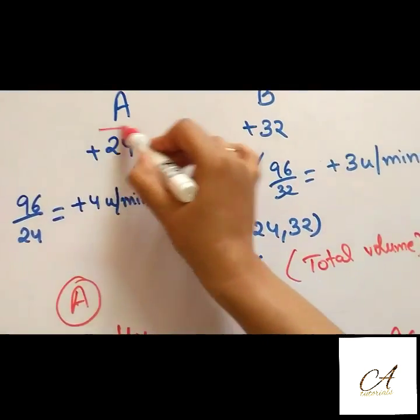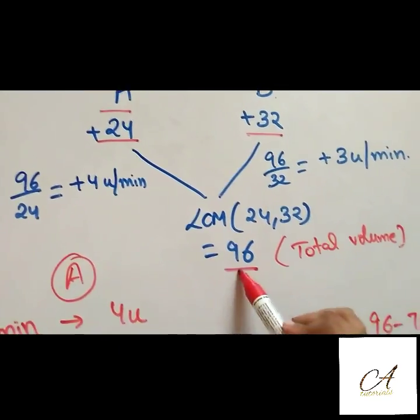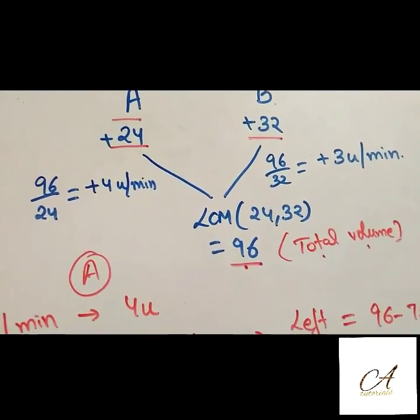A can fill in 24 minutes, B in 32 minutes. Let's take its LCM, it comes out to be 96. This is the total volume of the reservoir.